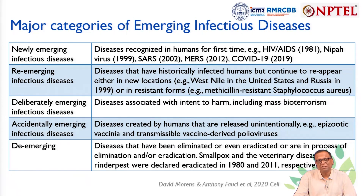Reemerging infectious diseases are those that have historically infected humans but continue to reappear either in new locations or in new forms — for example, the West Nile virus in the United States and Russia in 1999, or the methicillin-resistant forms of Staphylococcus.